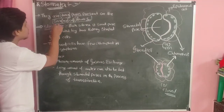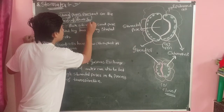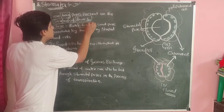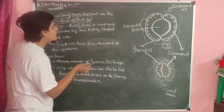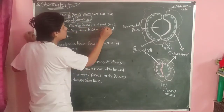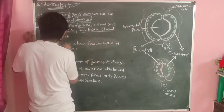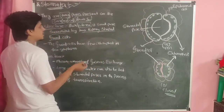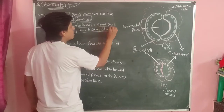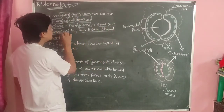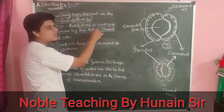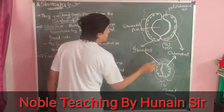Stomata is the plural form; stoma is the singular form. A stoma is a small pore surrounded by two kidney-shaped, or bean-shaped, guard cells.